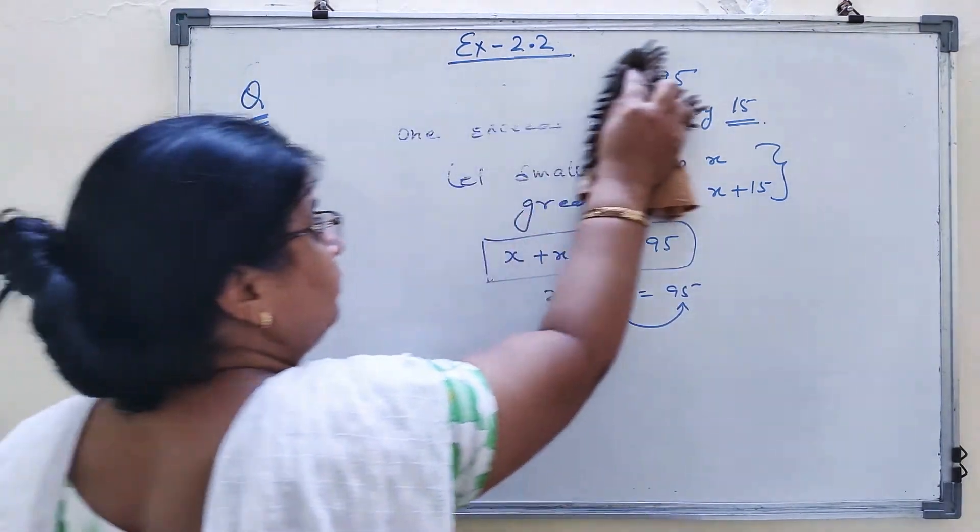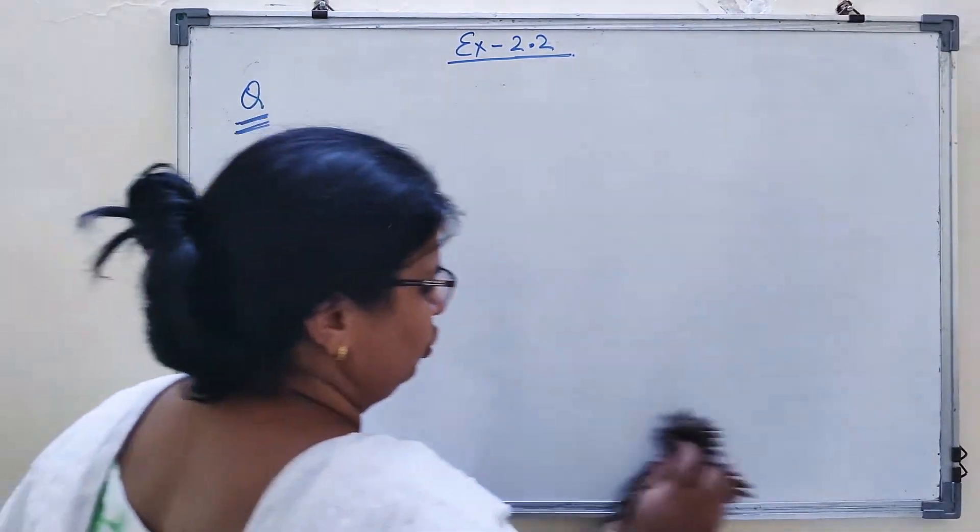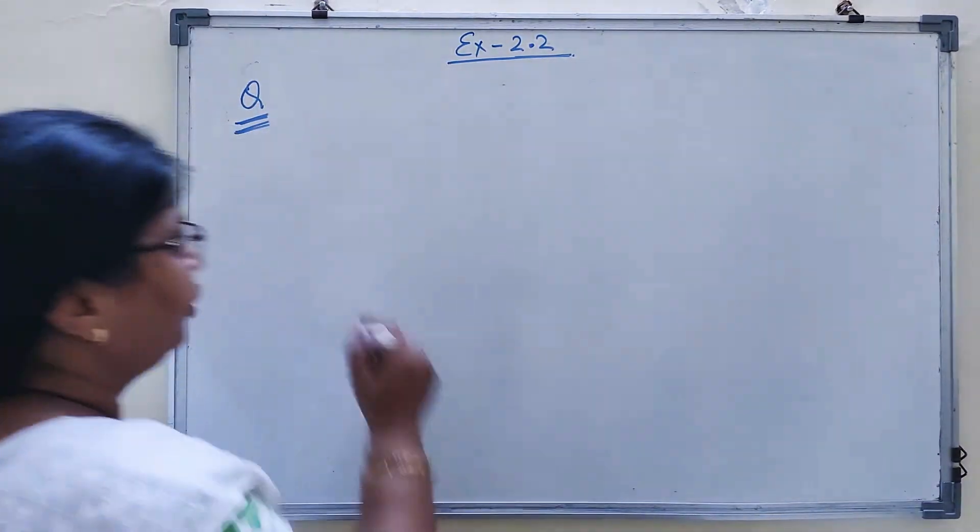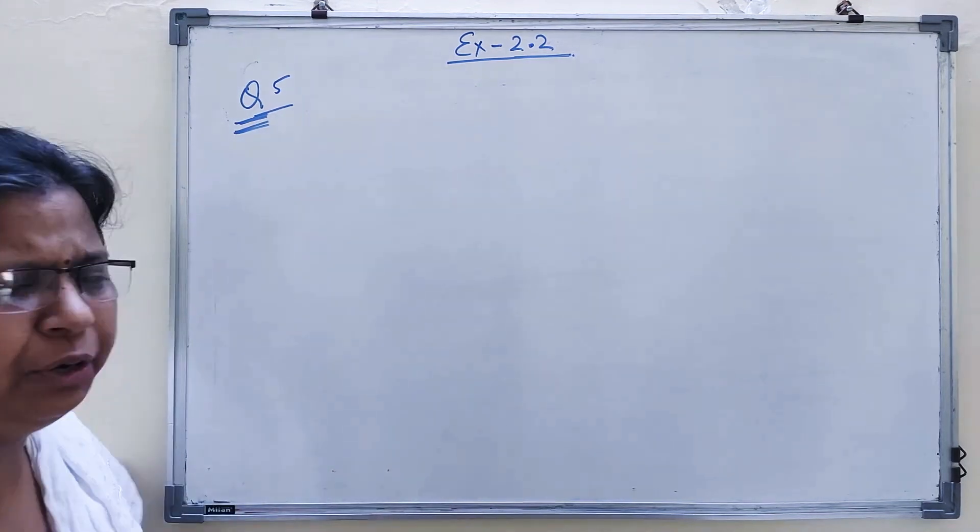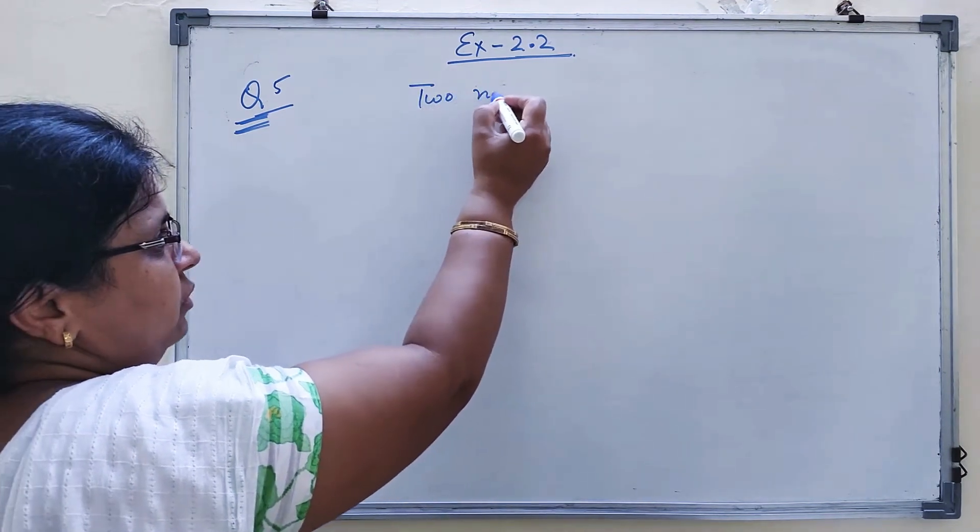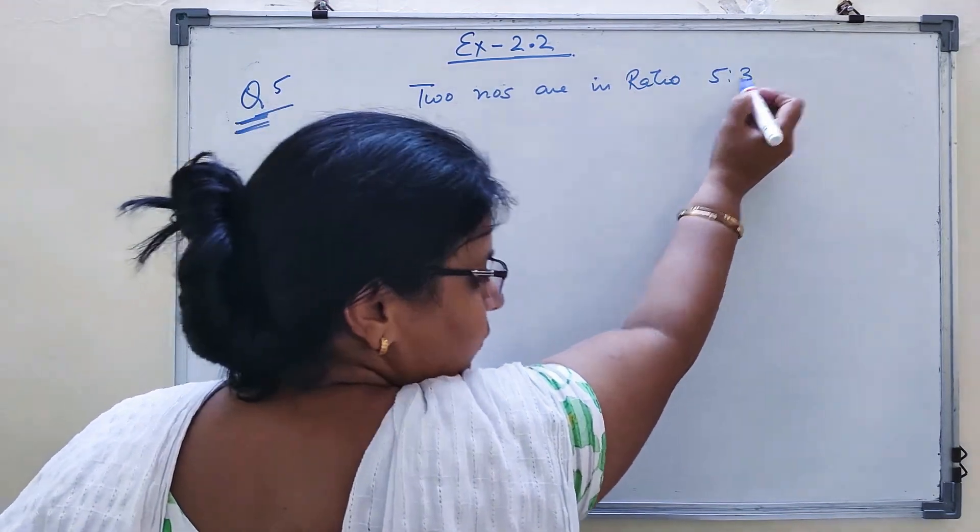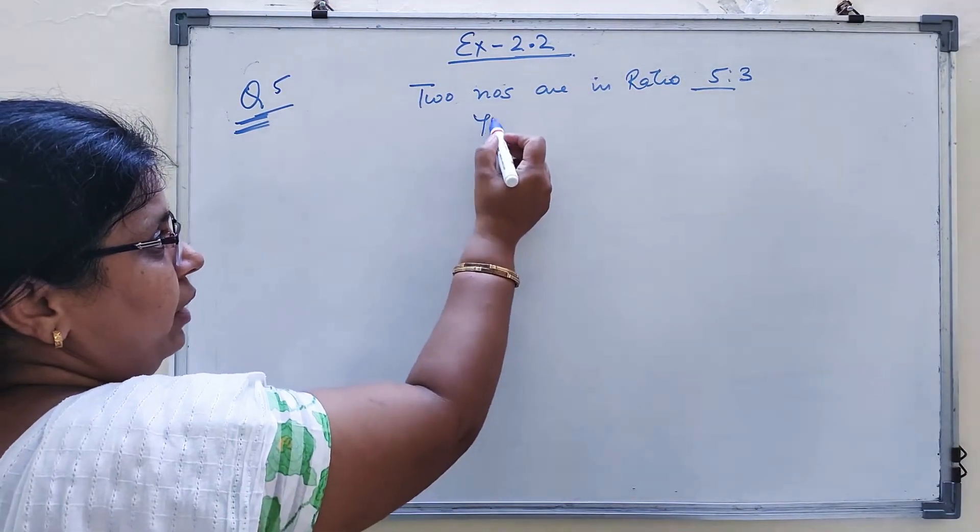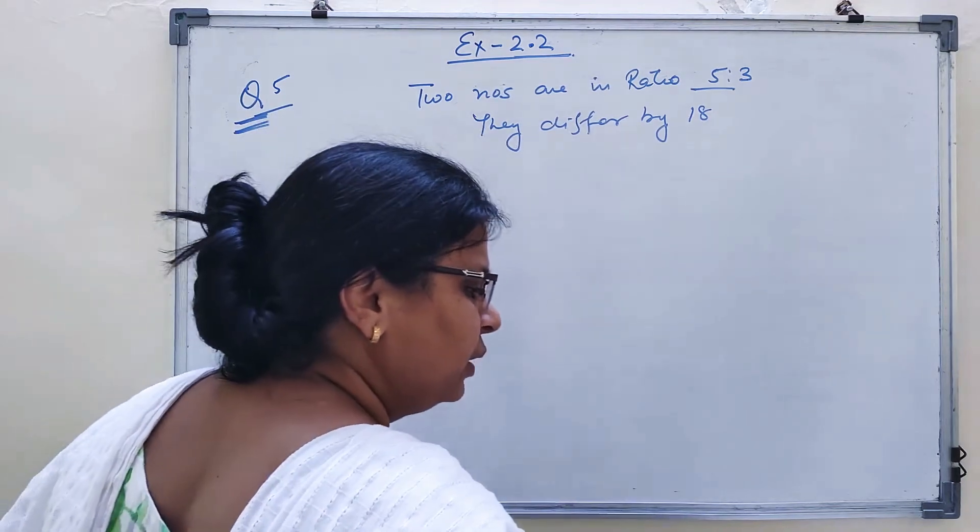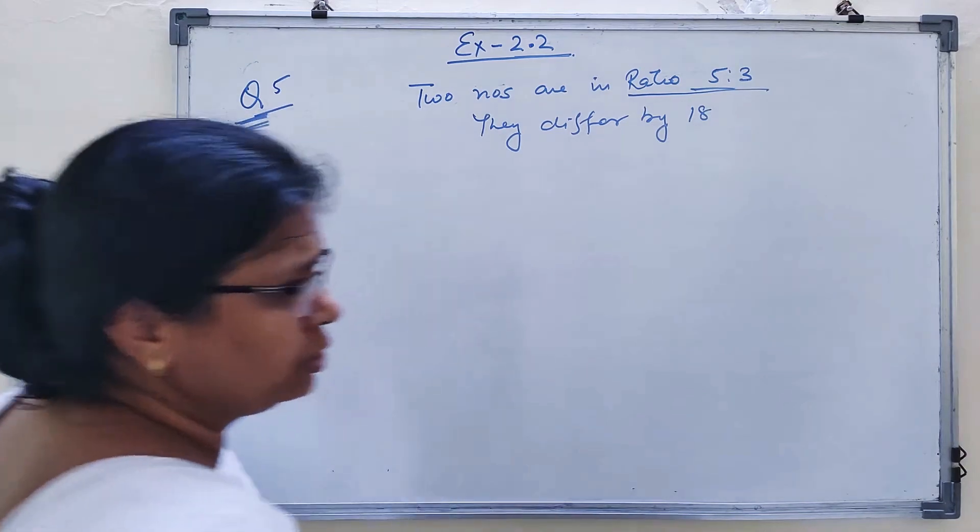Question number 5. Two numbers are in the ratio 5 is to 3 and they differ by 18.